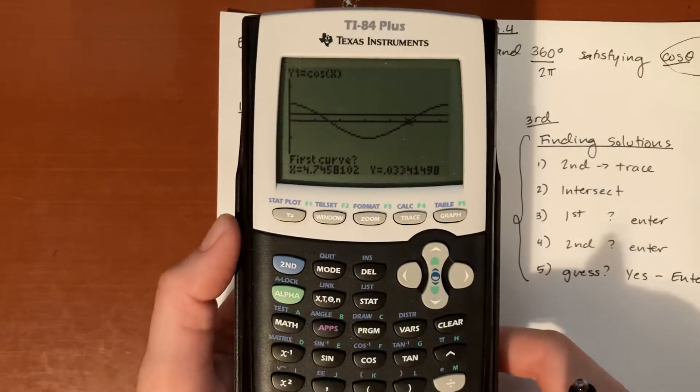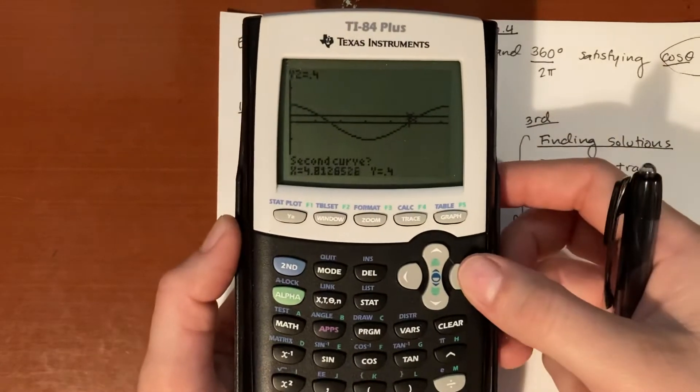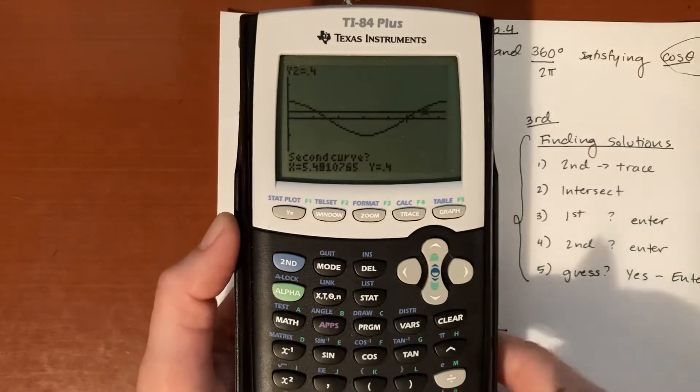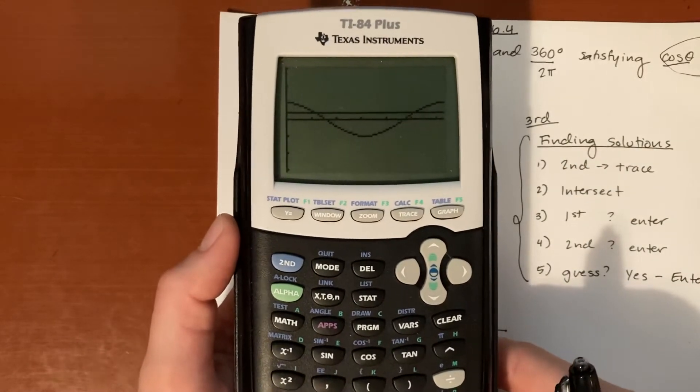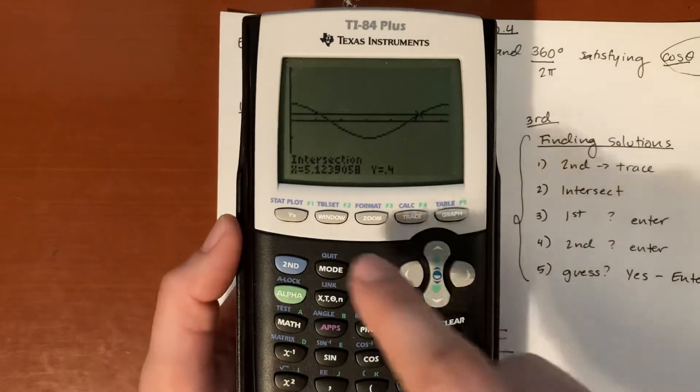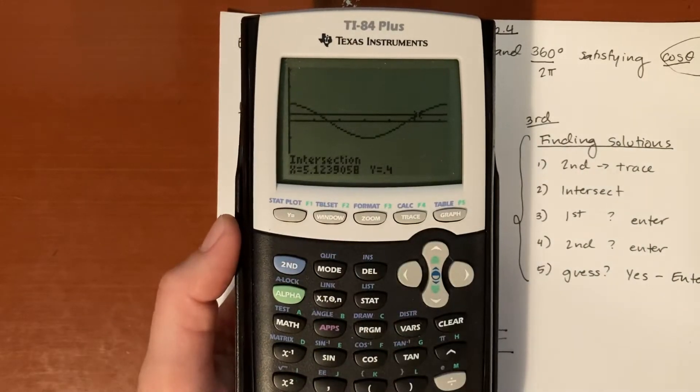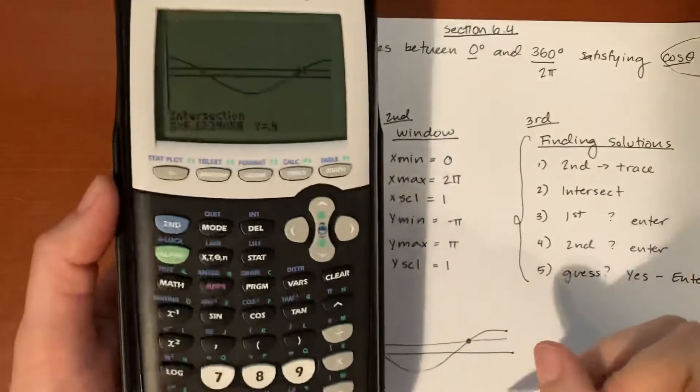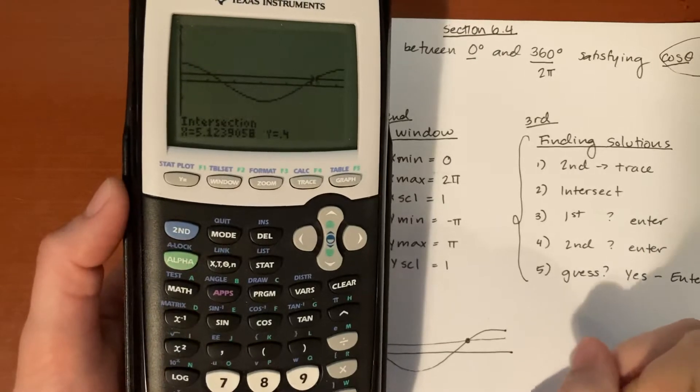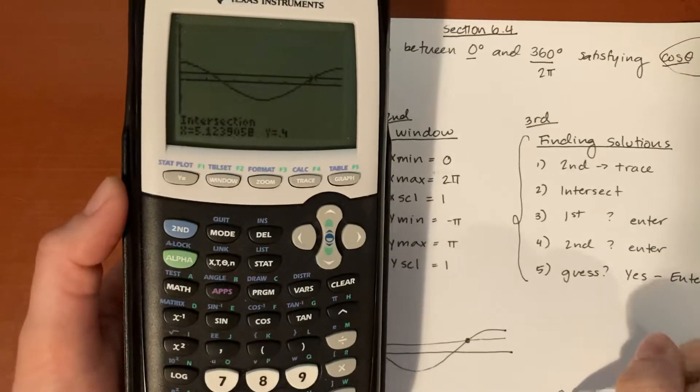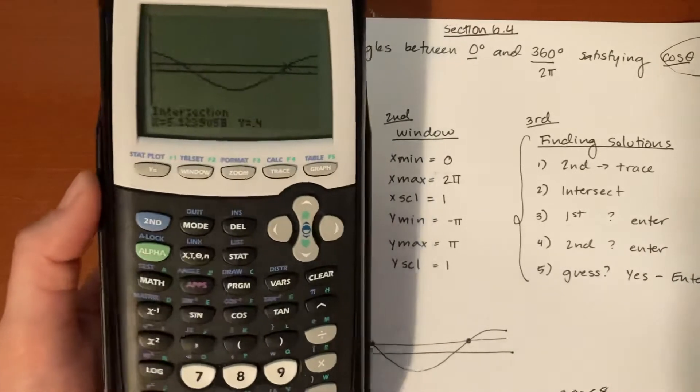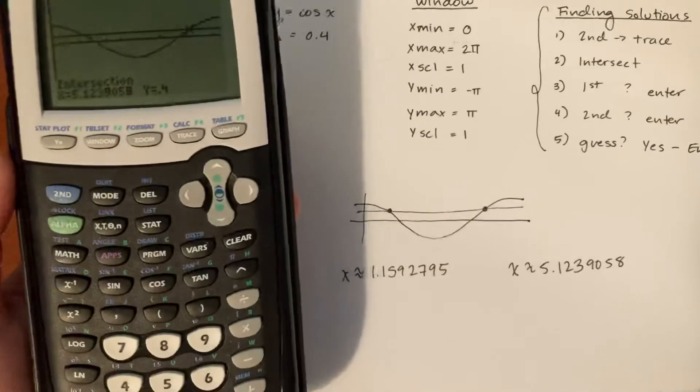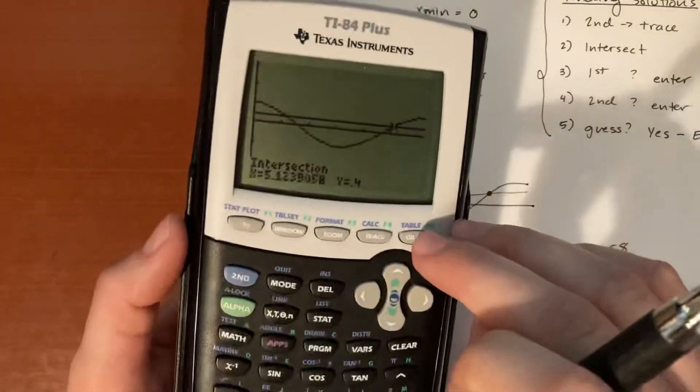And there we go, hit enter. Go for the second curve, close to it, there we go, hit enter. And it says guess, we'll go ahead and hit yes. So the intersection it gives me, which once again is in radians and we're trying to answer in degrees, we'll get x is approximately 5.1239058.